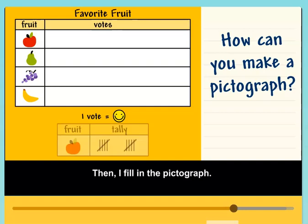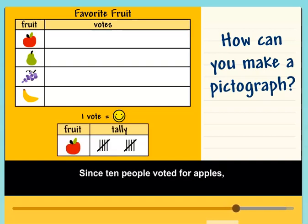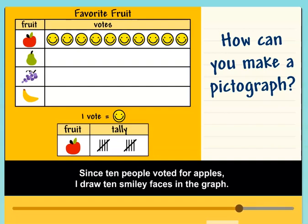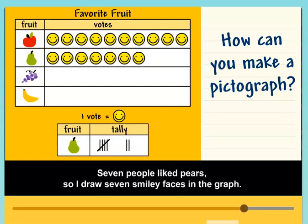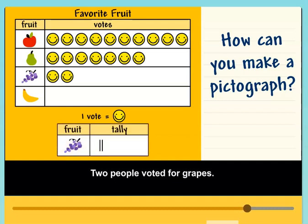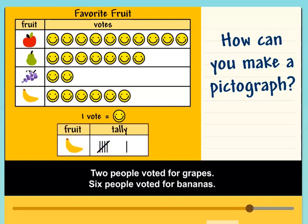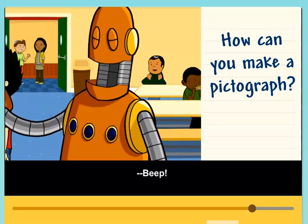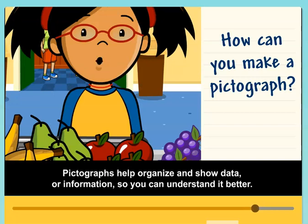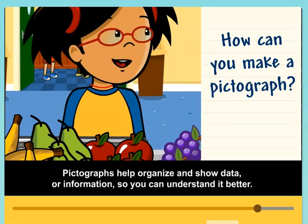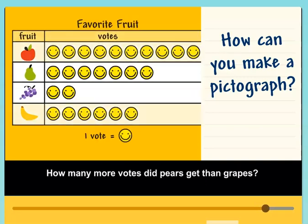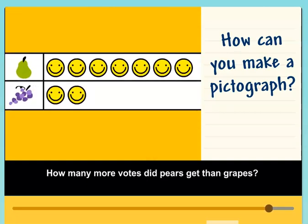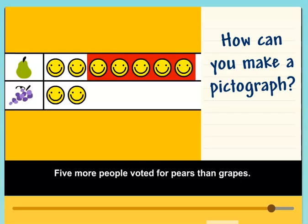Then I fill in the pictograph. Since ten people voted for apples, I draw ten smiley faces in the graph. Seven people like pears, so I draw seven smiley faces. Two people voted for grapes, and six people voted for bananas. Pictographs help organize and show data so you can understand it better. Which fruit got the most votes? Apple. How many more votes did pears get than grapes? Five more people voted for pears than grapes.